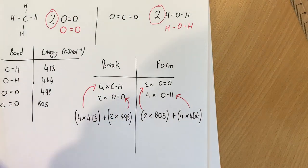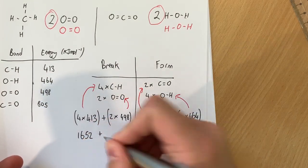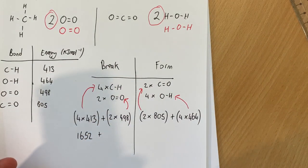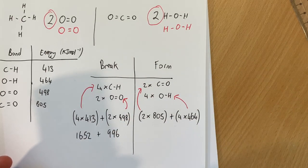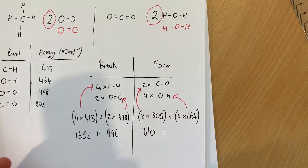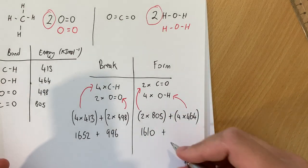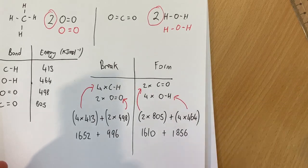Okay and again this one corresponds to here. This one corresponds to here. So we get our calculator. Let me put the numbers in. So 4 lots of 413 is 1,652. 2 lots of 498 is 996. 2 lots of 805 is 1,610. And 4 lots of 464 is 1,856.